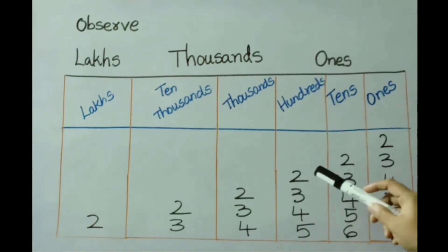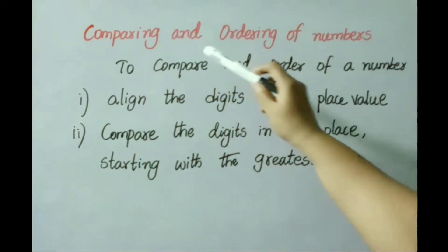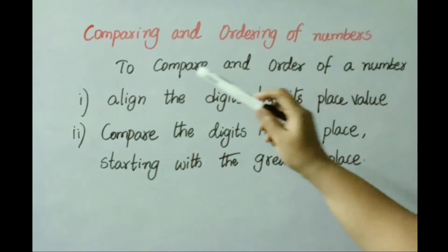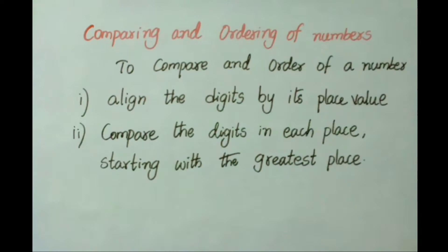See now comparing and ordering of numbers. To compare and order numbers, we have to follow the below steps. First, align the digits by its place value. We have to arrange them by using its place values. Second step: compare the digits in each place, starting with the greatest place.